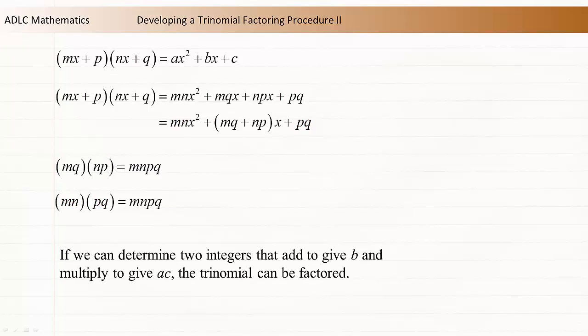The conclusion we can draw from this is if we can determine two integers that add to give b and multiply to give ac, the trinomial can be factored. The next video shows an example of this procedure.